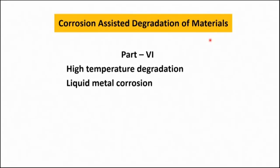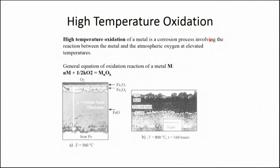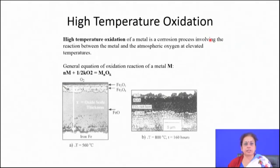So far we have been discussing about the aqueous corrosion problem, but high temperature oxidation or dry corrosion is a little bit different from aqueous corrosion, because in this kind of corrosion there is no aqueous media in the environment. If you quickly go through the definition of high temperature oxidation or dry corrosion, it basically occurs in the absence of aqueous media.